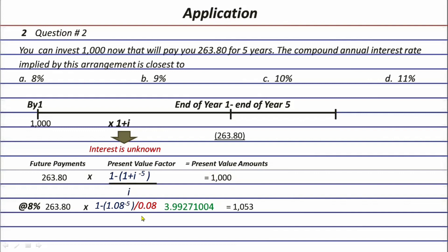A good strategy is to try the middle of the choices first — nine percent or ten percent — because if one of them gives the target value, you can immediately cross out the higher or lower options. For example, if I try nine percent first, I get 1,026, which is still higher than one thousand. That tells me I need a rate higher than nine percent, so I can cross out eight percent without even testing it.